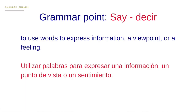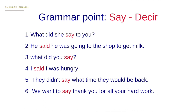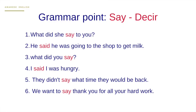So when we're using 'say', we use words to express information, a viewpoint, or a feeling. Here are a few examples: 'What did he say to you?' 'He said he was going to the shop to get some milk.' 'What did you say?' 'I said I was hungry.' 'They didn't say what time they would be back.' 'We want to say thank you for all your hard work.' In all of these instances, we're using 'say' to comment, show a viewpoint, or express information.